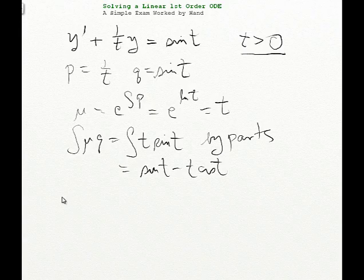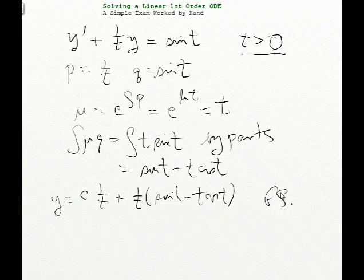So putting this all together, our solution is c times μ inverse, so c times 1/t, plus μ inverse, 1/t, times the integral of μq, which we just did. So that's sin(t) - t·cos(t). And there's the general solution of the original differential equation. These functions, for any choice of real number c, solve the differential equation. And those are all the solutions.